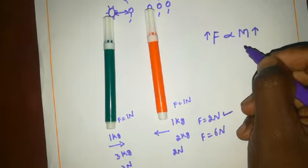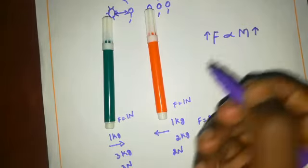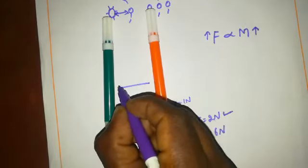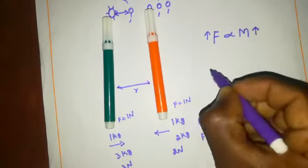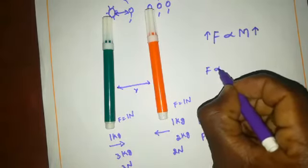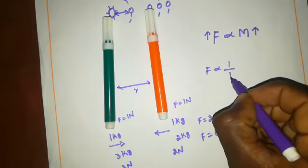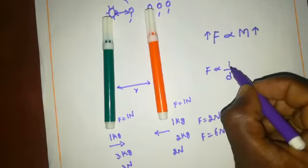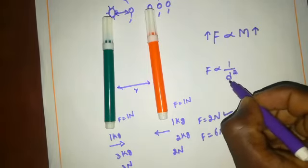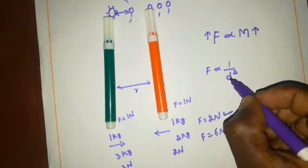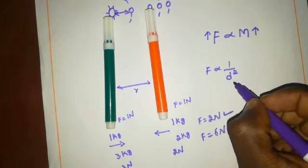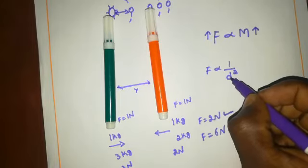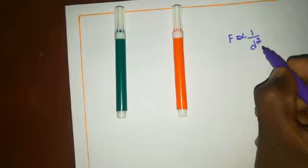Here we learn one more concept — that is distance. If the distance between the two objects is R, then the force is inversely proportional to the square of the distance, D squared. I will explain this with an example.